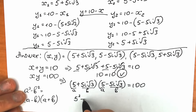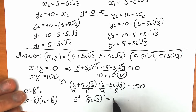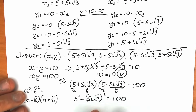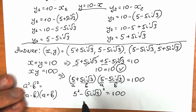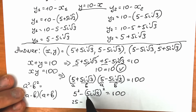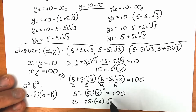We compute 5 squared equals 25, minus (5i√3) squared, which is 25 times i squared times 3. Since i squared equals minus 1, we have 25 minus (25 times minus 1 times 3).